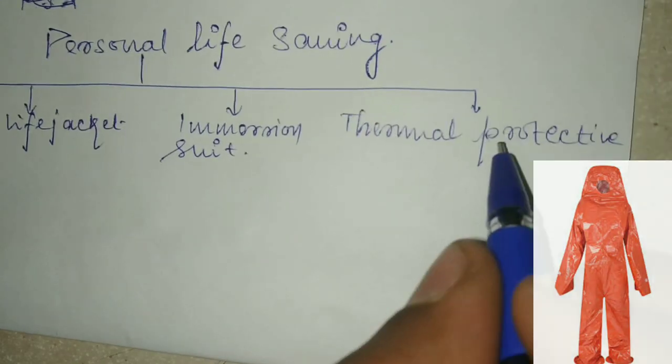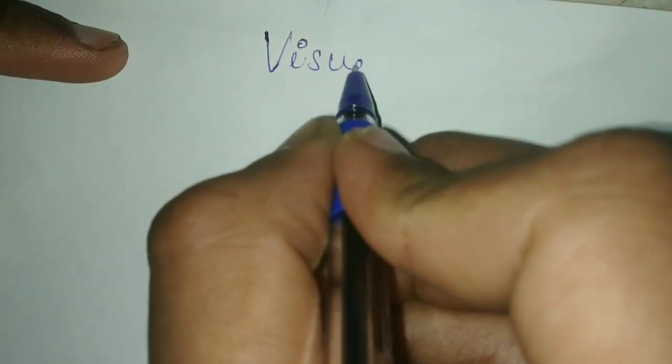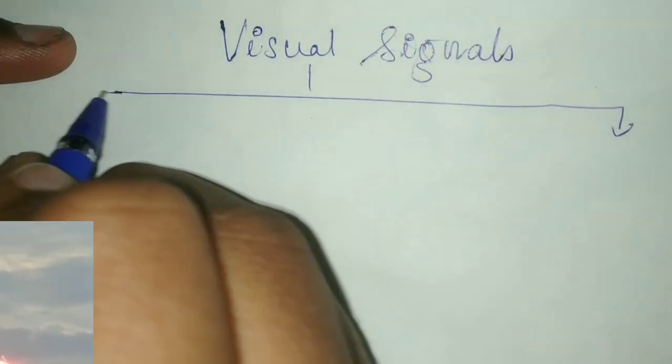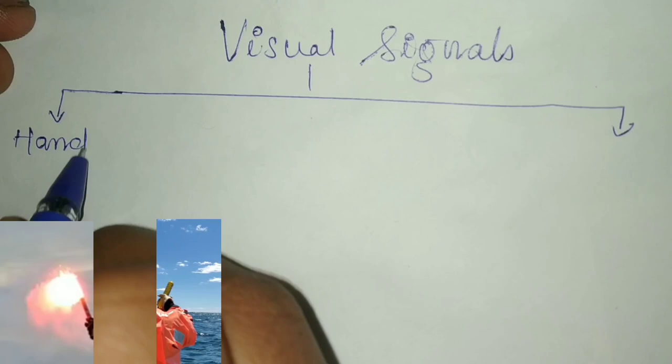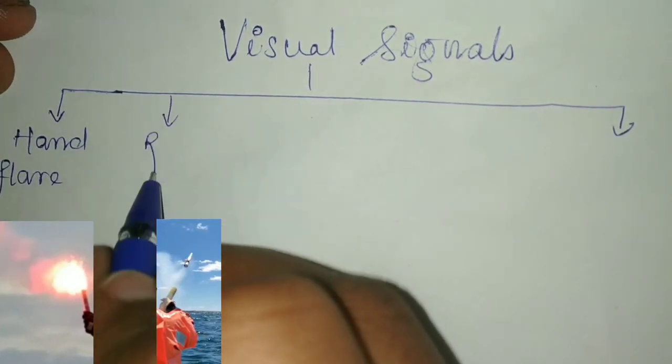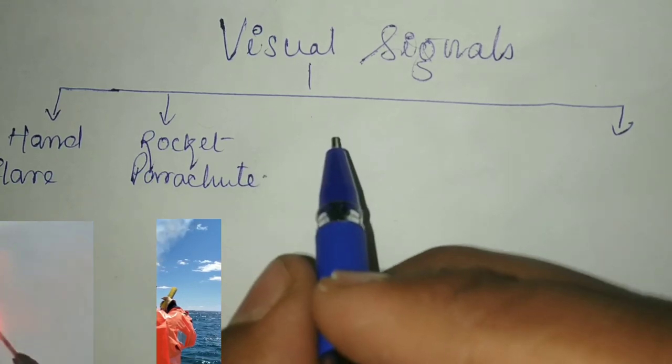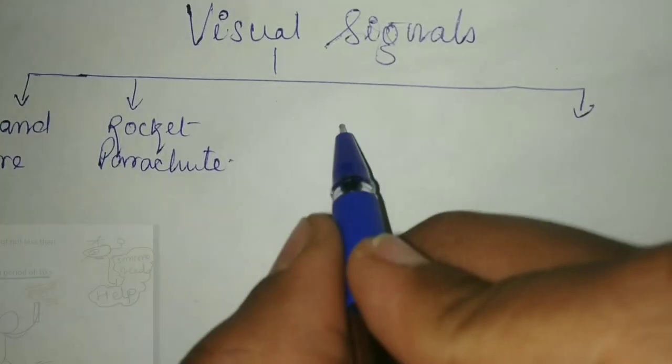Now we will see different types of visual signals. Visual signals, as you know, can be seen by others. The first is the hand flare, second is the rocket parachute, and third is the smoke signal.